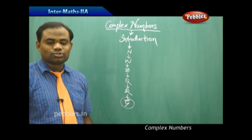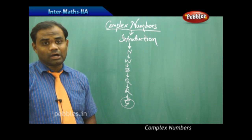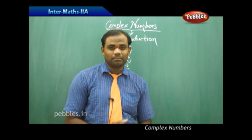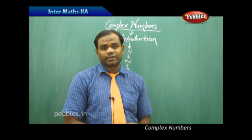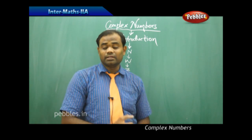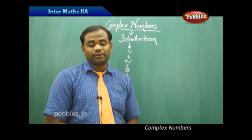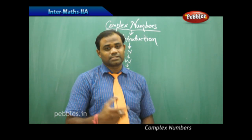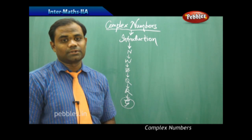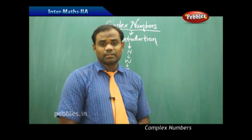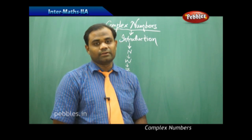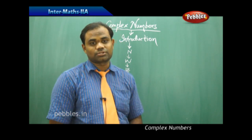Now, what do we mean by complex numbers? How do we define them? We have been discussing quadratic equations: a quadratic has real and equal roots if delta equals zero, real and unequal roots if delta is greater than zero, and imaginary or complex roots if delta is less than zero. So what are these imaginary or complex roots, and what is the difference between real and complex roots?